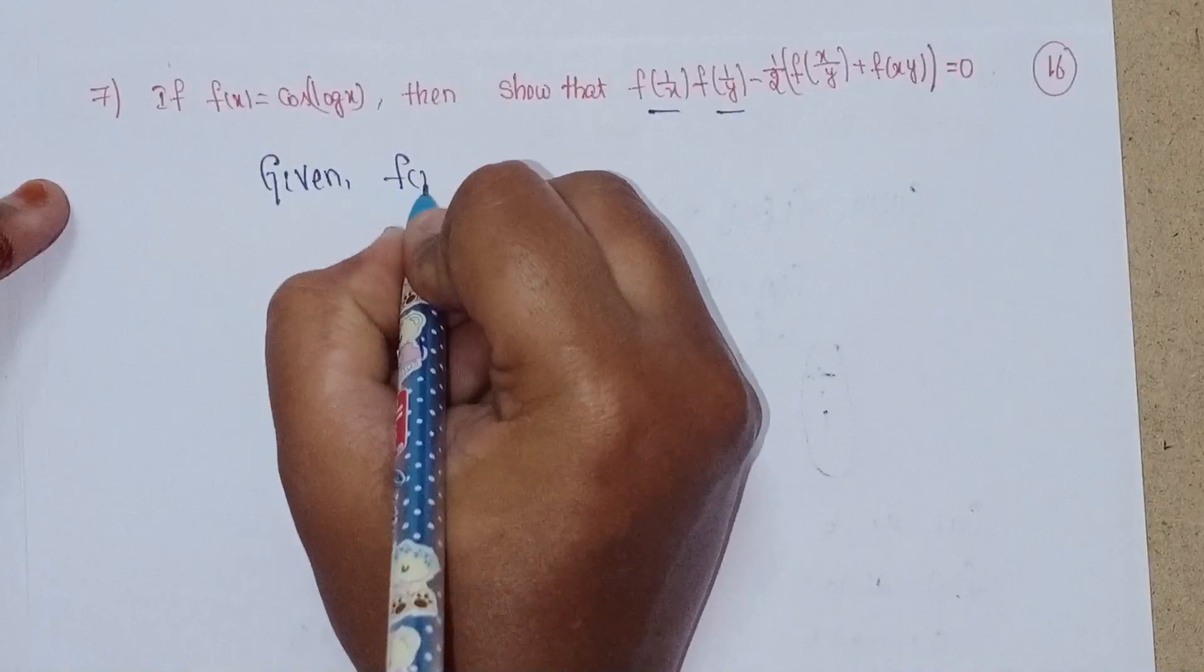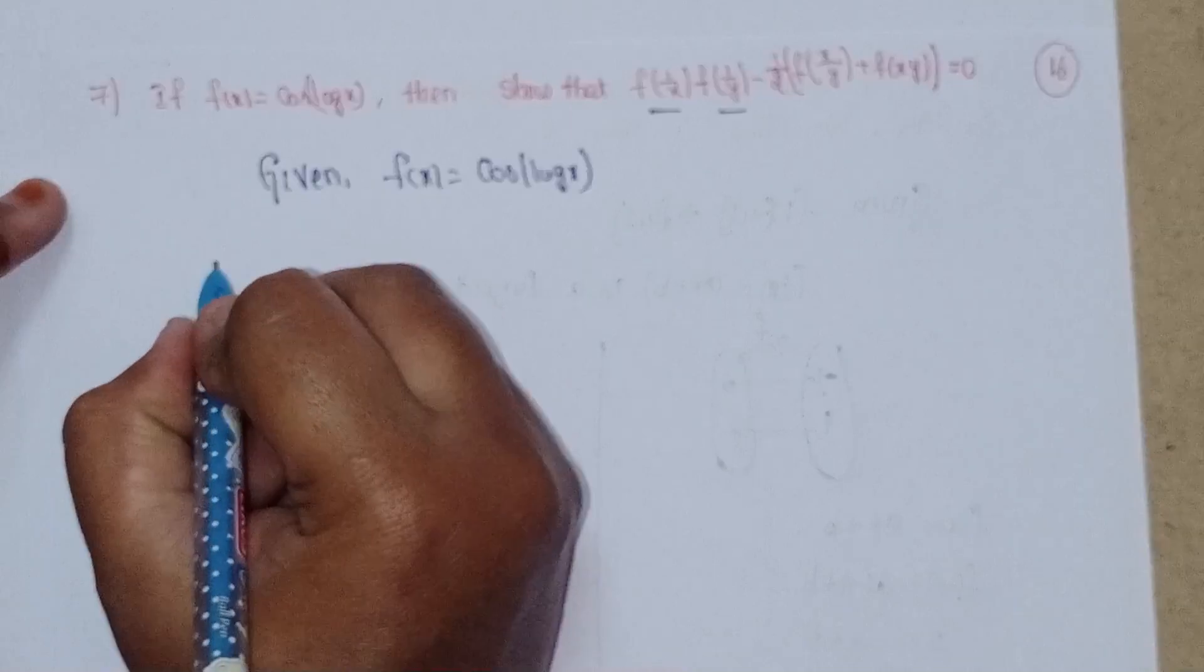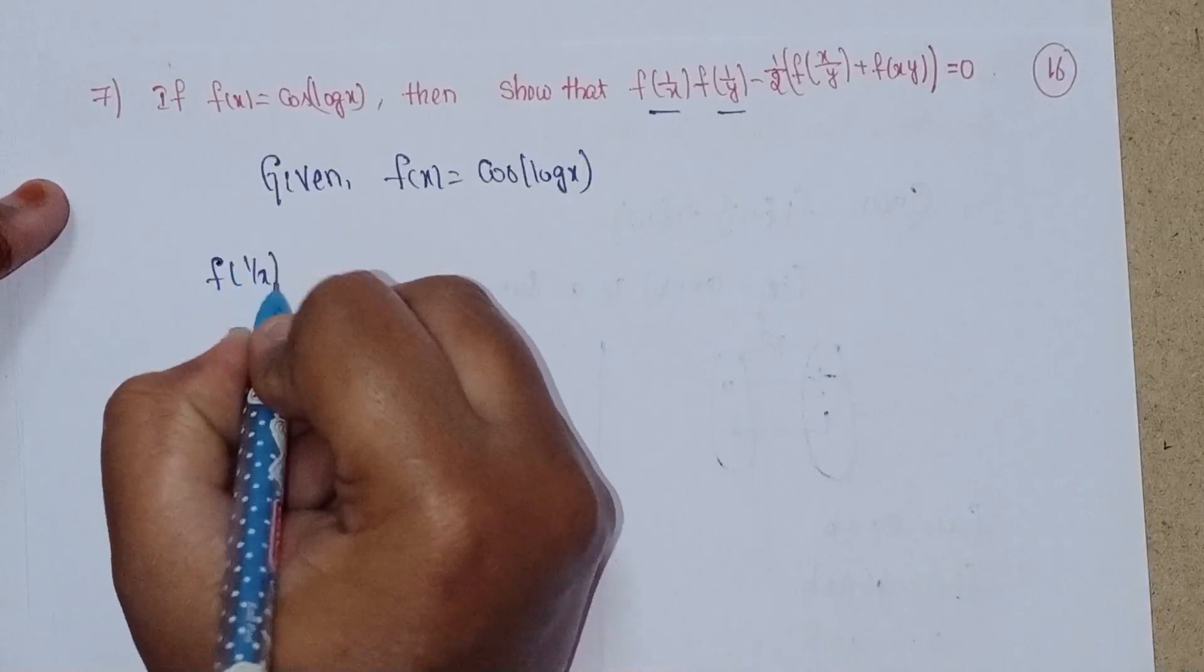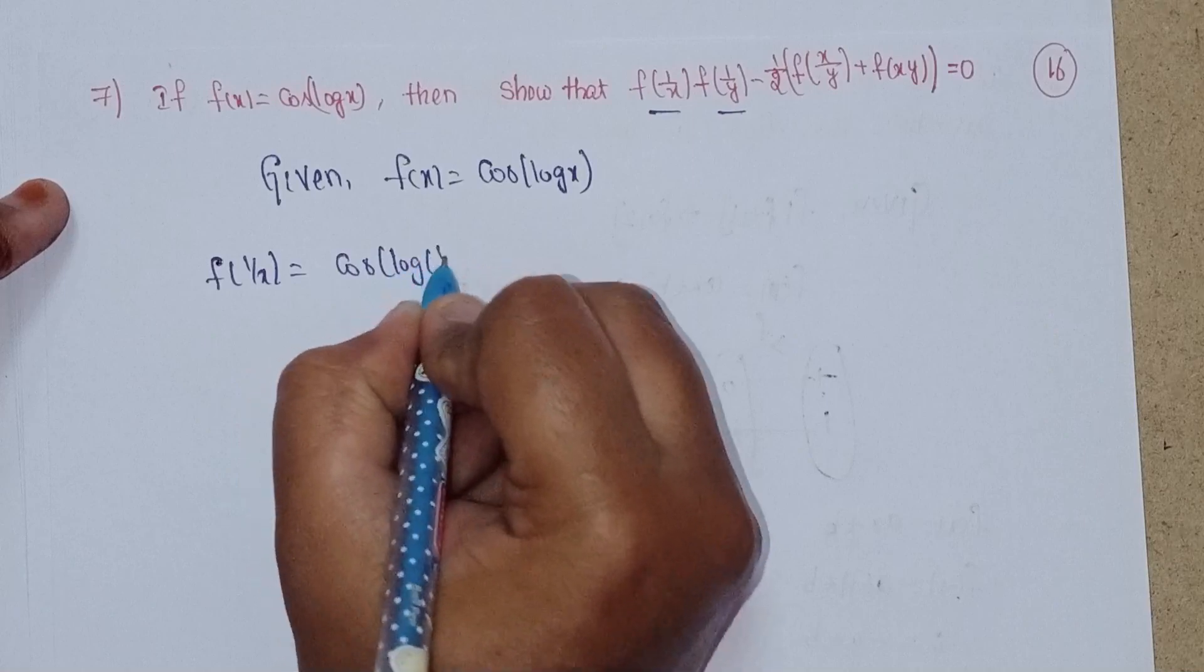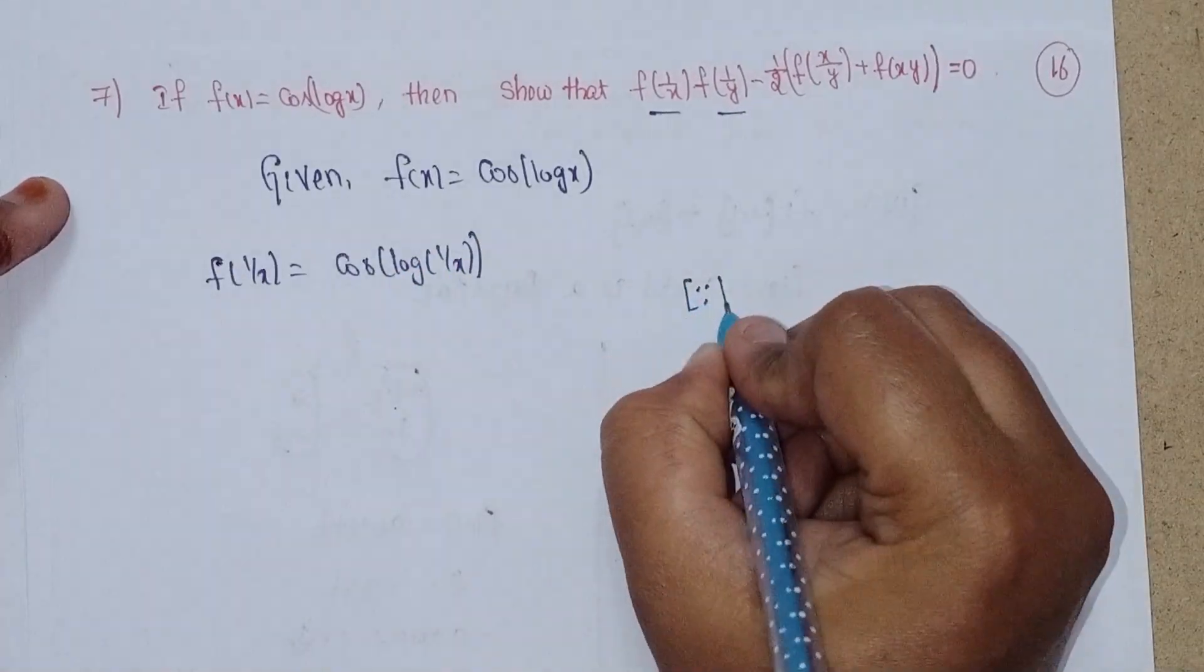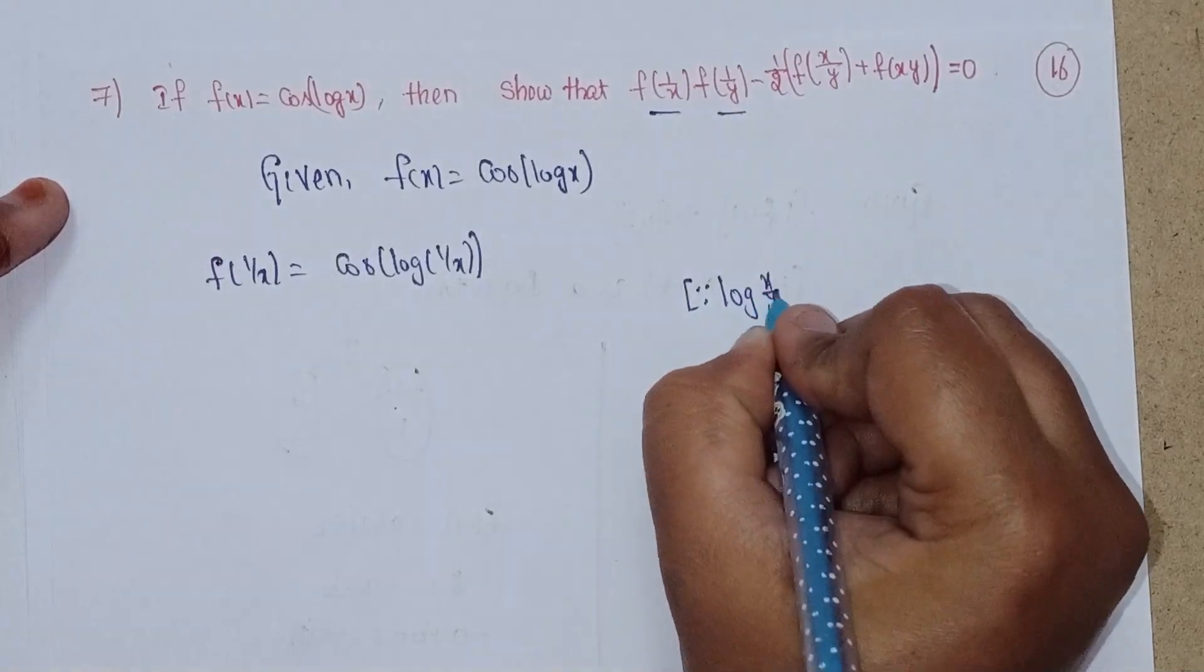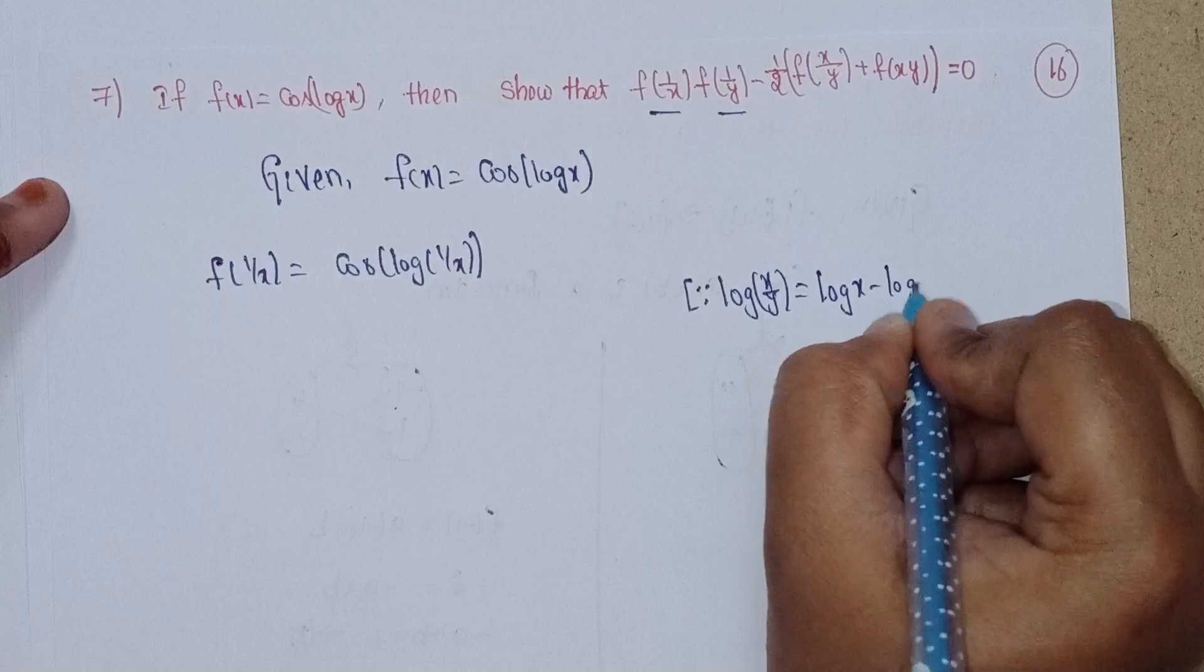Given f(x) = cos(log x). To solve for f(1/x), we substitute: f(1/x) = cos(log(1/x)) = cos(log 1 - log x).